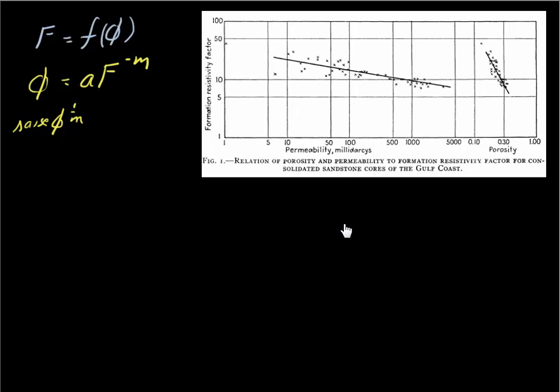I left you with the question of how do we take this function F, shown down here — this is the starting relationship we were working from — and how do we come up with F as a function of phi, this relationship over here. I said, well, just raise both sides of this equation to the 1 over m power. In Archie's paper we have the formation factor and we have the porosity.